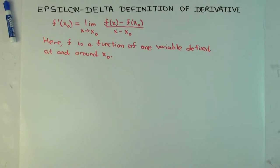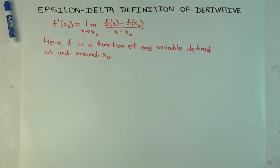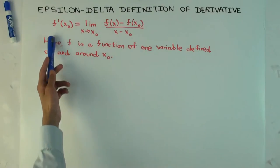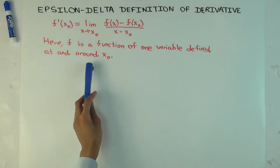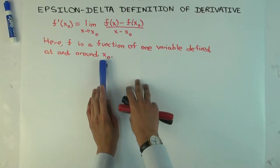Okay, so in this talk, I'm going to try to come up with an epsilon-delta definition of the derivative. Now what's that mean? Well, the derivative of a function f, f is a function of one variable defined at and around some point x naught, so x naught is a point in the interior of the domain.